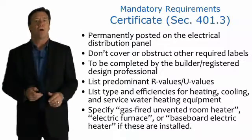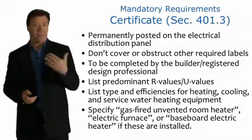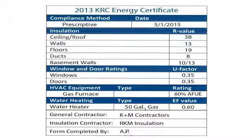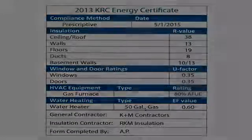The certificate lists predominant R-values and U-values, the types and efficiencies of heating, cooling, and water heating equipment, and specifies whether a gas-fired or unvented room heater, electric furnace, or baseboard electric heater is installed. Here's an example of what one of these certificates looks like for Kentucky. At the top, the compliance method was prescriptive, and then you have the R-values listed. The inspector simply looks at the 402.1 chart and then this certificate to verify that insulation in the ceiling, walls, floors, and roof meets the standard. It also tells the type of HVAC equipment and gives the U-factor of windows and doors.